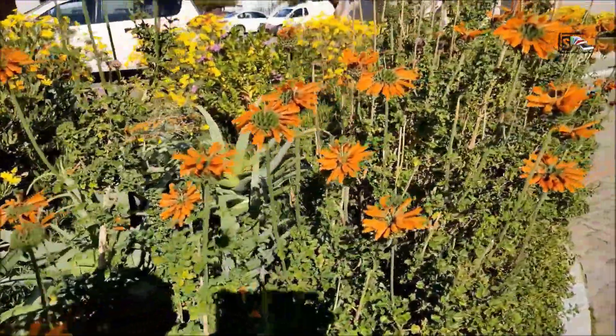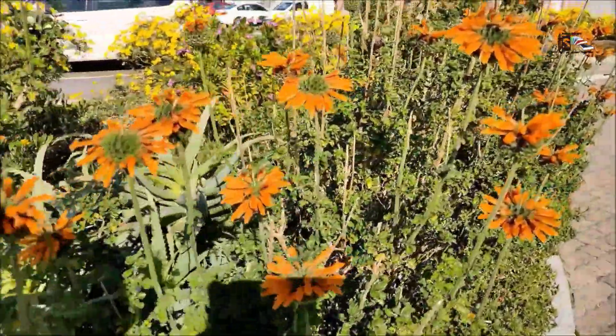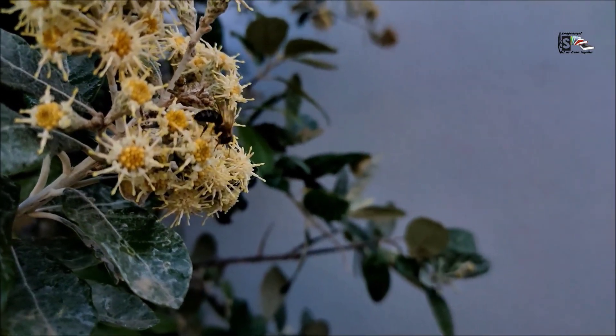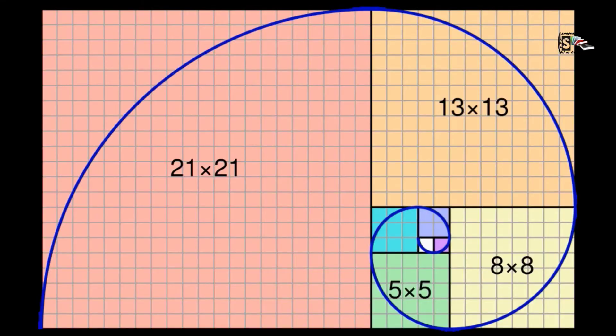It carries on and on. If we put these Fibonacci numbers in blocks, it starts to form a spiral shape, which is called the golden ratio. It is a special number which is equal to 1.618. These reoccurring numbers and patterns in nature must come from the base units of the universe, as all things seem to share them in common.